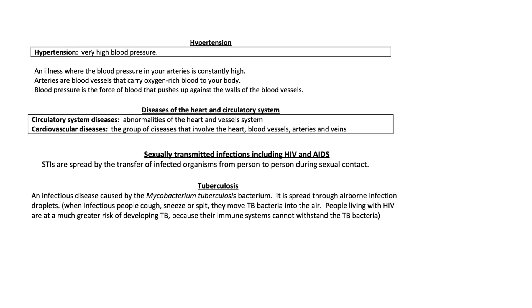Some more lifestyle diseases. Hypertension — know the definition. This is just high blood pressure. This is an illness where the blood pressure in your arteries is constantly high. Arteries are the blood vessels that carry oxygen-rich blood into your body. Blood pressure is the force of blood that pushes up against the walls of the blood vessels.